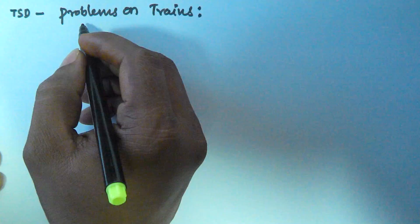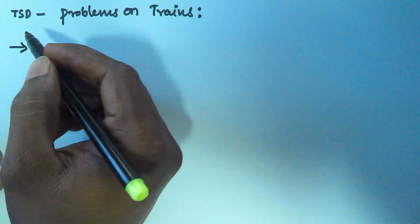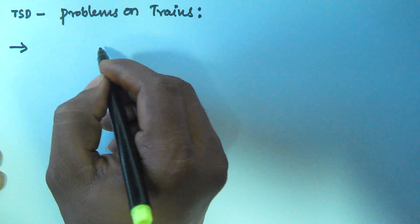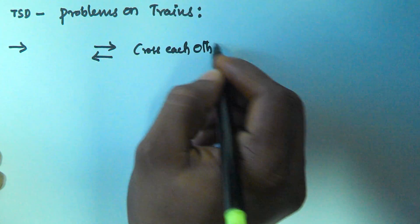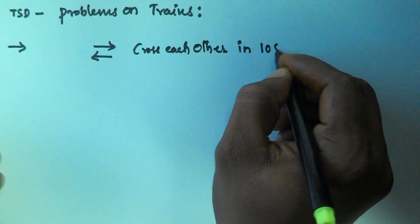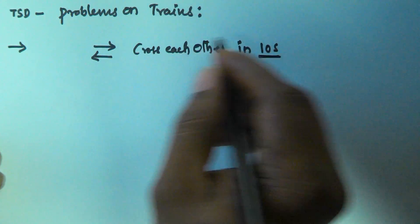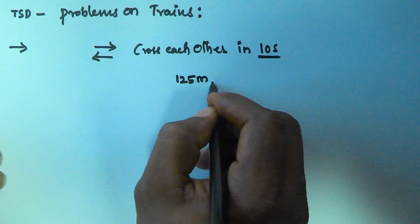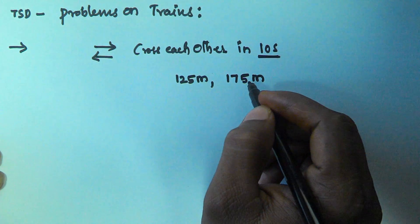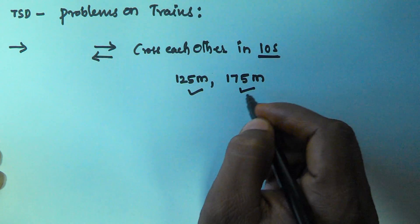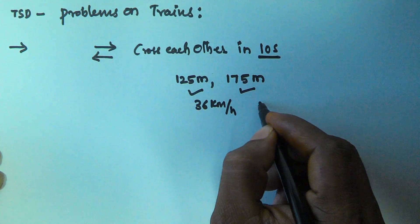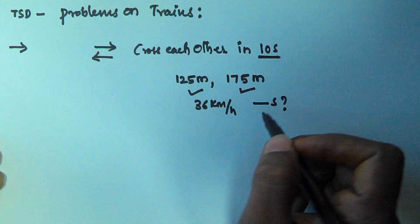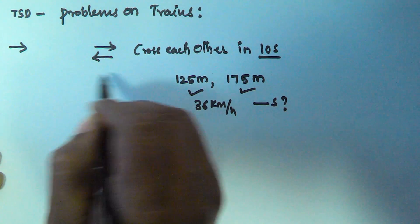Hello friends, in this video we will see some problems based on trains related to time, speed, and distance. Let us consider there are two trains coming from opposite sides and they cross each other in 10 seconds. The length of the first train is 125 meters and the length of the second train is 175 meters. The speed of the first train is 36 kilometers per hour, so what is the speed of the second train?